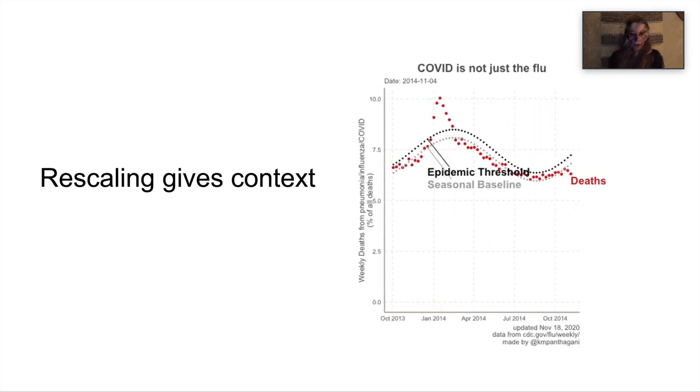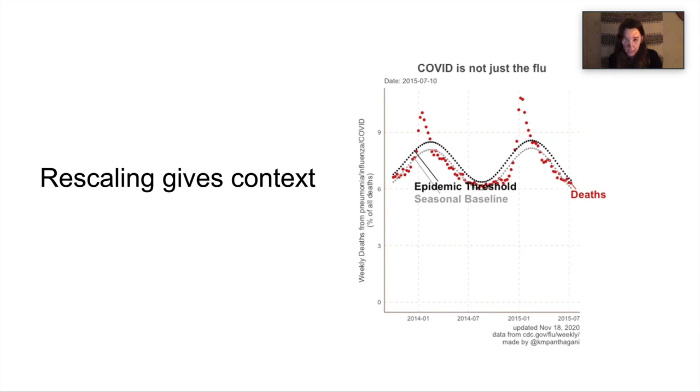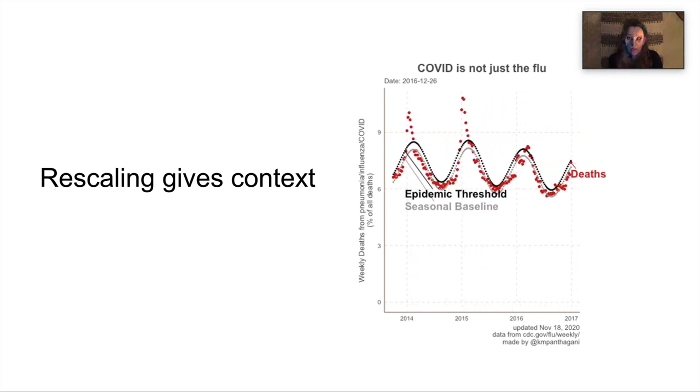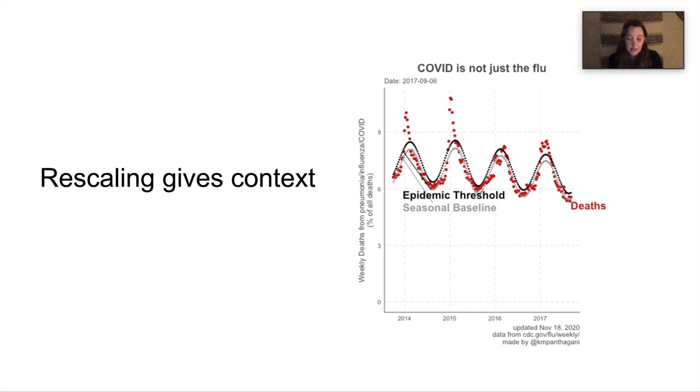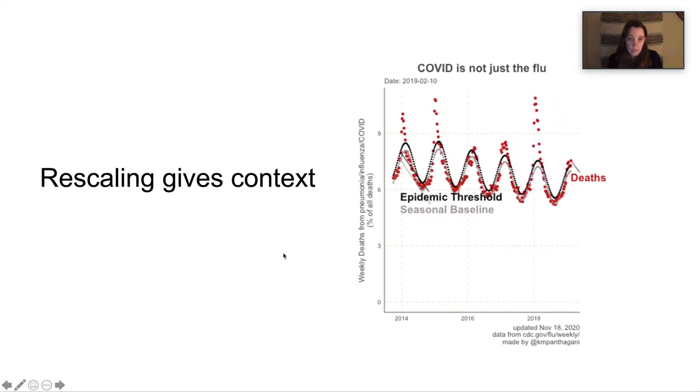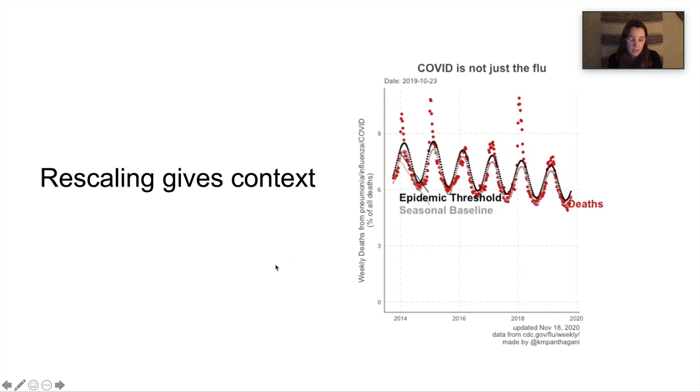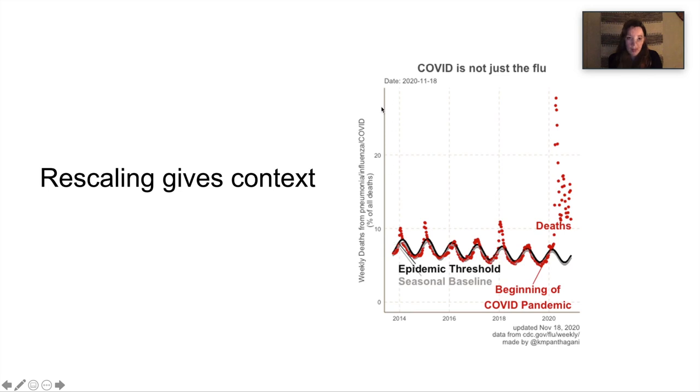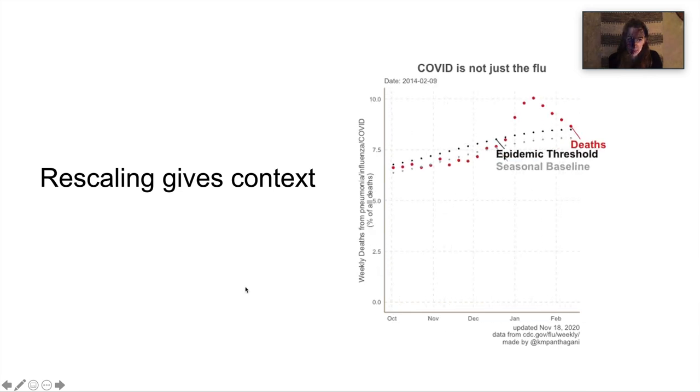All right, so this is another plot I made of different data. This is weekly deaths from pneumonia and influenza and then recently COVID over the last several years. So I plotted this just to show the baseline for the seasonal flu, and then watch in just a second, you'll see COVID. So then it shoots up. And so having this axis rescale really makes that change really dramatic and drives home the point that the COVID pandemic, the amount of deaths that we are seeing is way different than previous flu sequences.